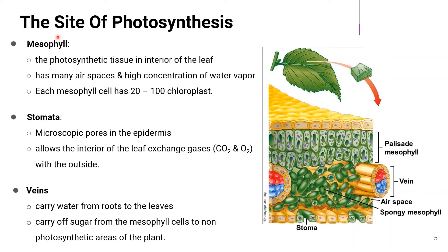Now let's look at the site of photosynthesis. We are focusing on photosynthesis in plants, so basically photosynthesis occurs in the leaf. At the leaf, there is the mesophyll cell, which is the photosynthetic tissue. The interior of the leaf has many air spaces and a high concentration of water vapor. Each mesophyll cell has 20 to 100 chloroplasts. You can clearly see in the interior of the leaf that the mesophyll cells are within it, surrounding the vein of the leaf.